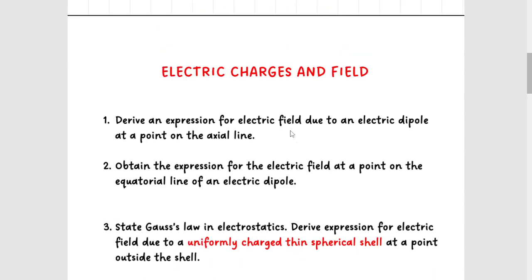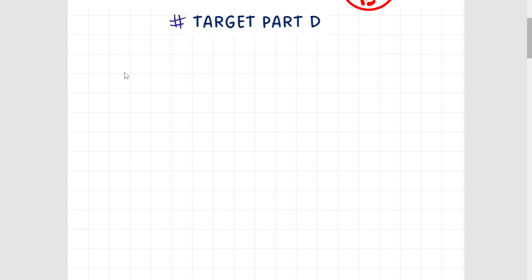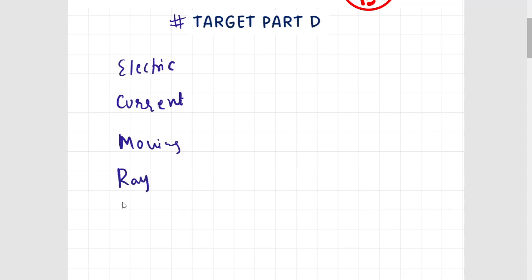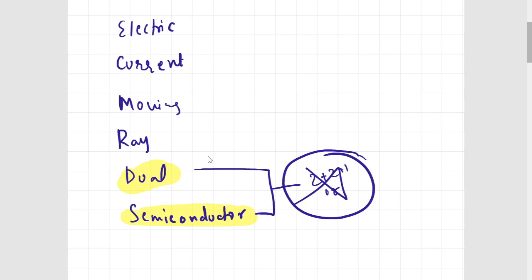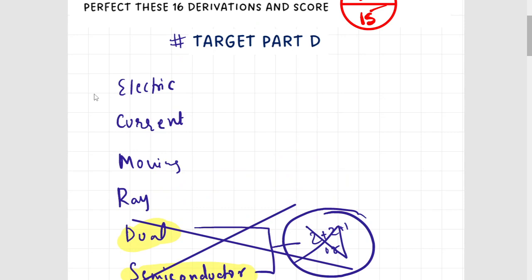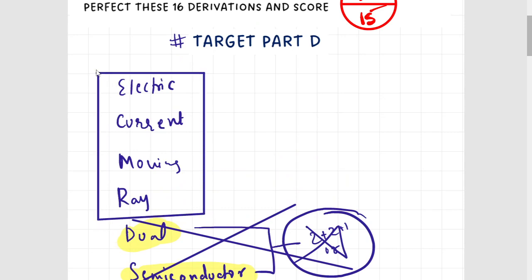First, coming to electric charges and field. If you look at the model paper, the total chapters in the derivations: the first chapter is electric charges and field, second is current electricity, third is moving charges and magnetism, fourth is ray optics, fifth is dual nature, and sixth is semiconductors. For the final exam model question, dual nature and semiconductors do not have direct derivations — so to be on the safer side, you can skip these two chapters. You just need to perfect these four chapters.